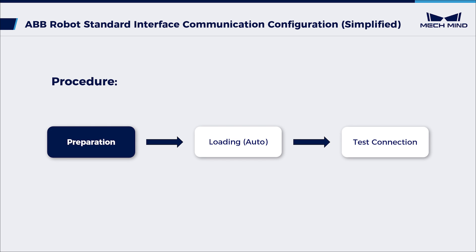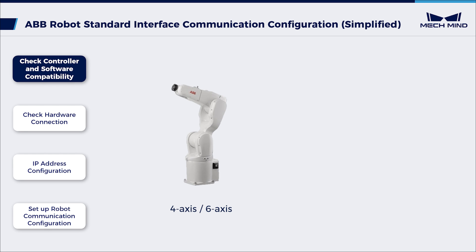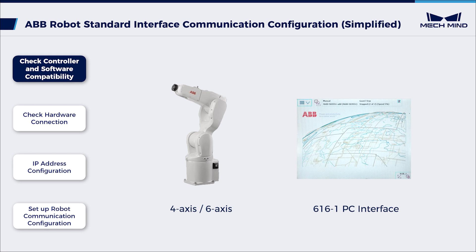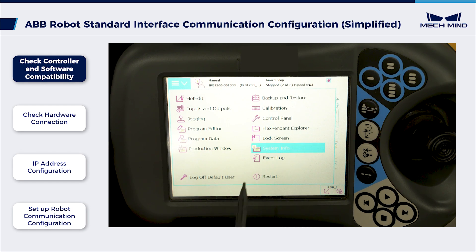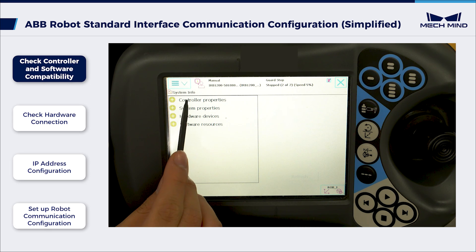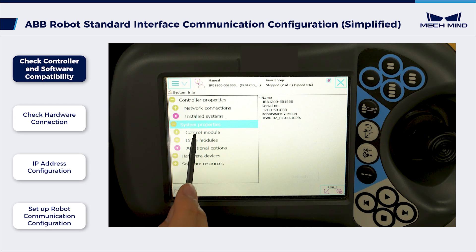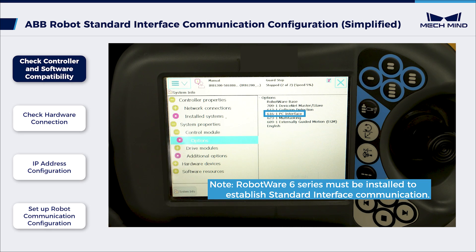First, let's begin with the preparation. Ensure that you have selected a 4-axis or 6-axis ABB robot. Make sure that the RobotWare option 616-1 PC interface is installed in the robot controller. Tap System Info on the Teach pendant, choose System Properties, tap Control Module and then tap Options. Check if the Control Module 616-1 PC interface is installed.